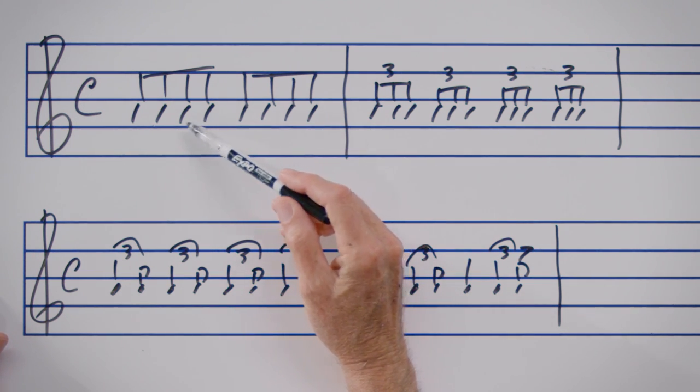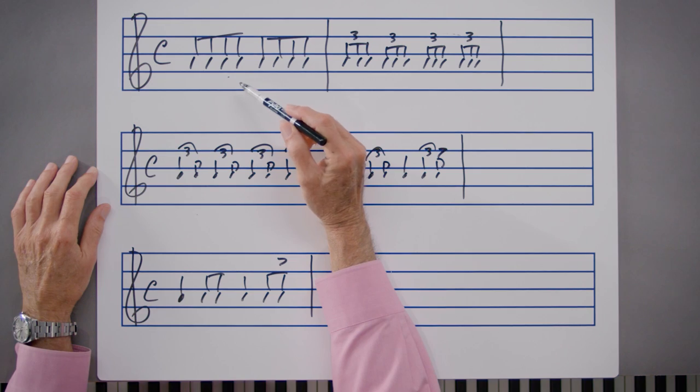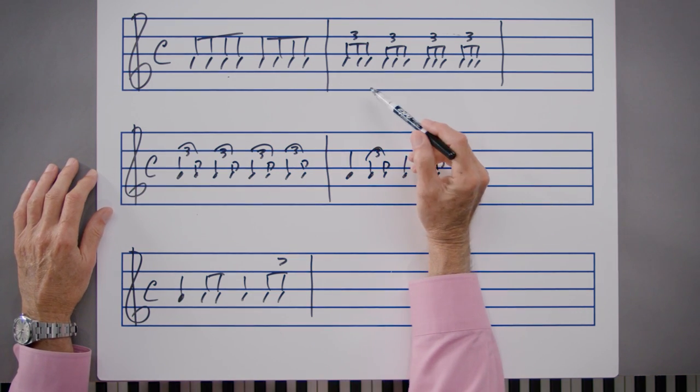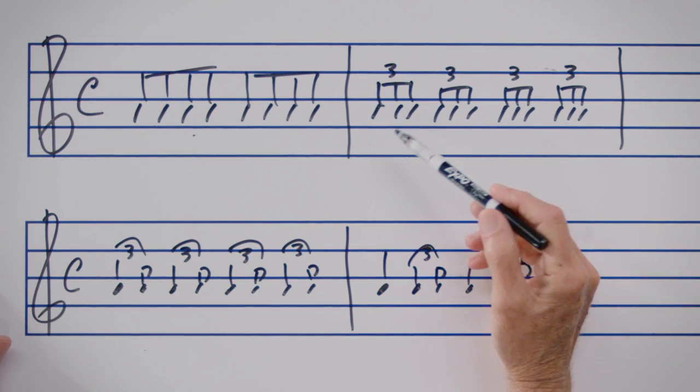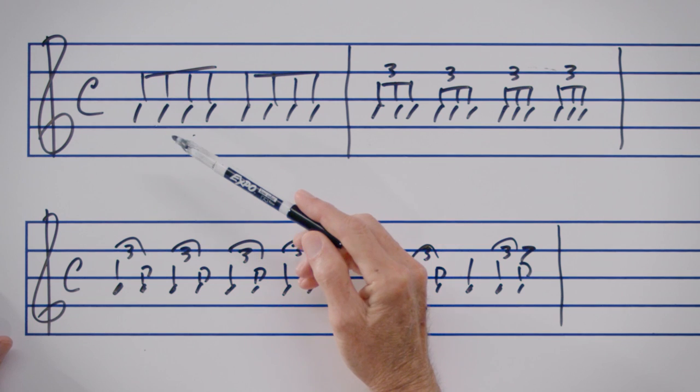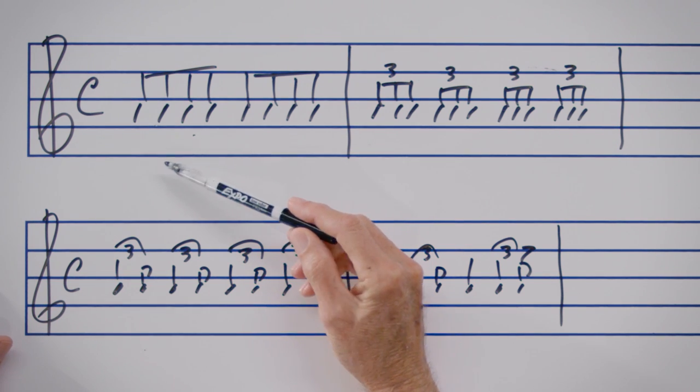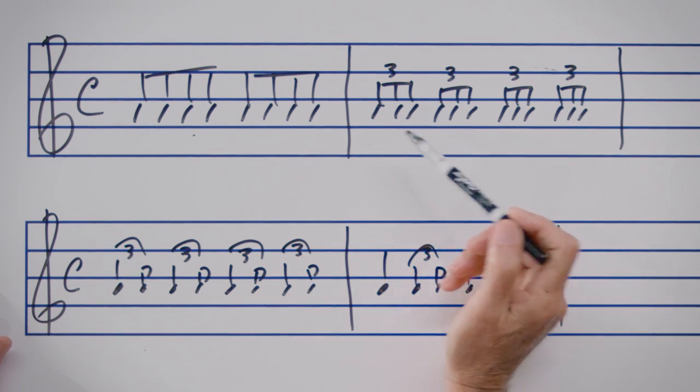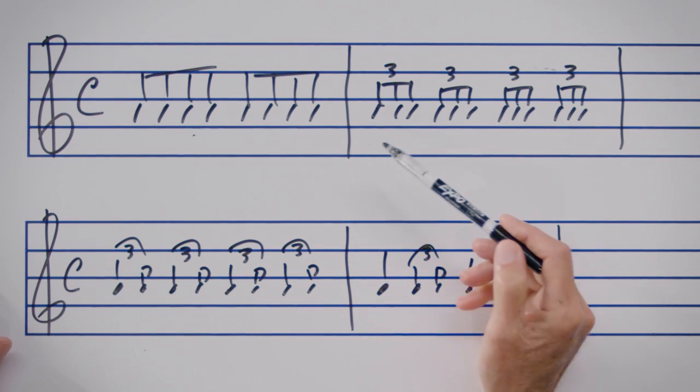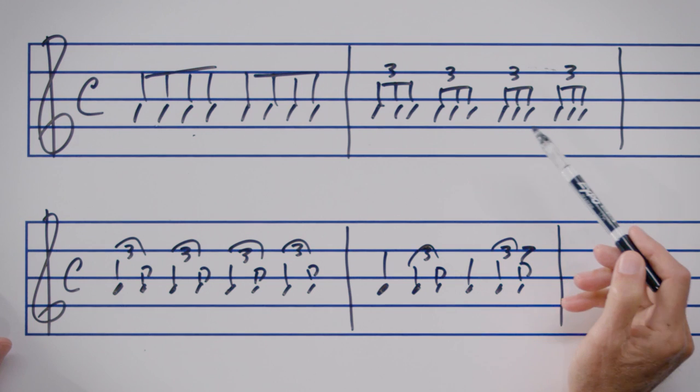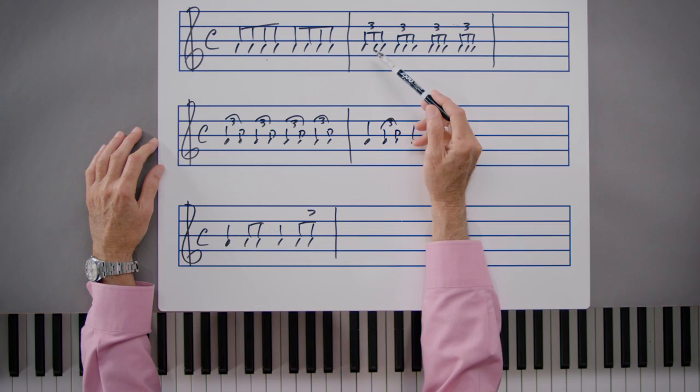In order to better understand swing eighth notes, we need to look at eighth note triplets, which I've notated over here. At the same tempo, as we move from eighth notes into triplets, we would have one and two and three and four and. In eighth note triplets, we get three even attacks against each pulse.